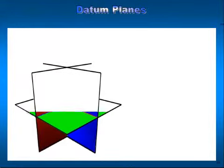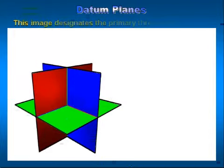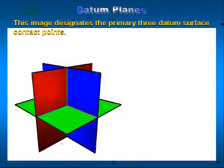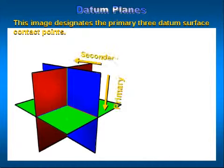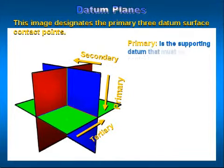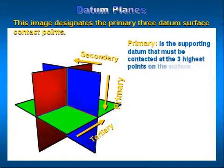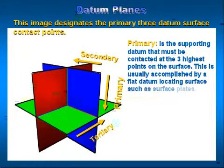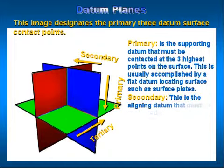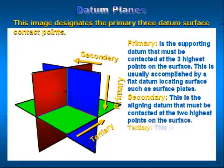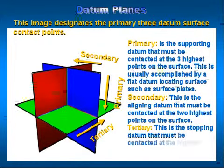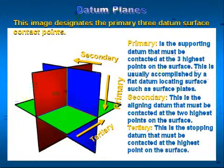The primary three datum surface contact points are primary, secondary, and tertiary. Primary is the supporting datum that must be contacted at the three highest points on the surface, usually accomplished by a flat datum locating surface such as a surface plate. Secondary is the aligning datum that must be contacted at the two highest points on the surface. And tertiary is the stopping datum that must be contacted at the highest point on the surface.